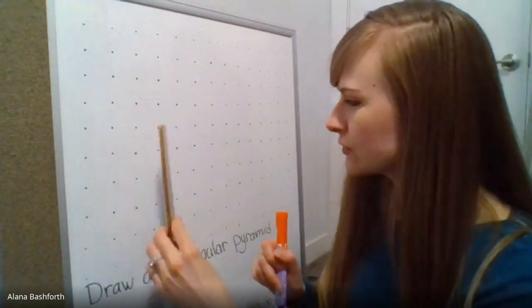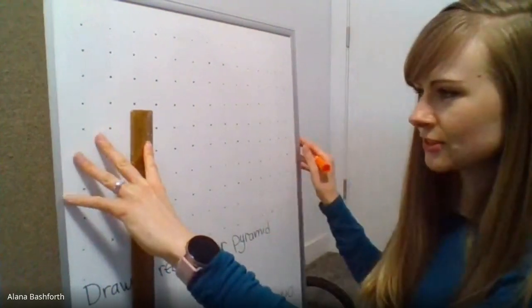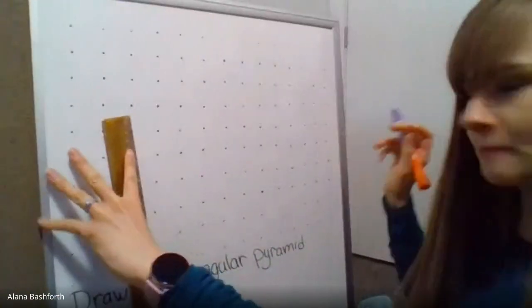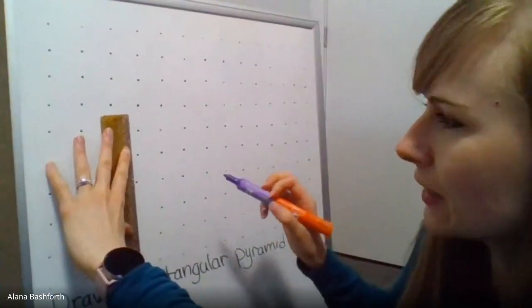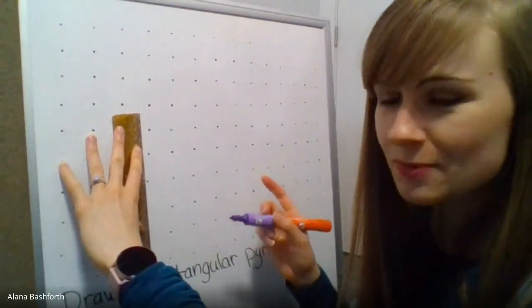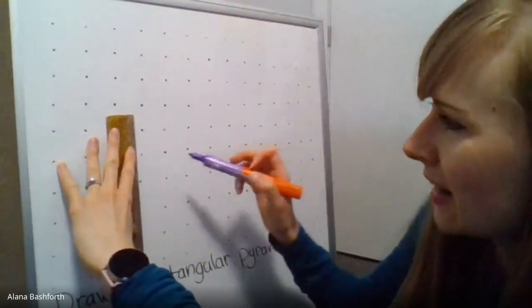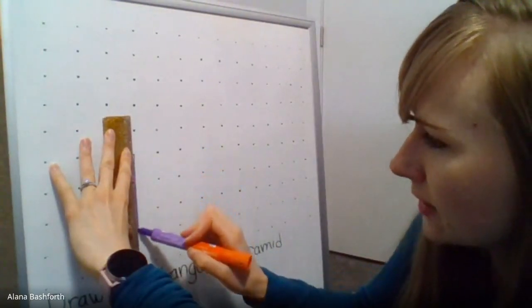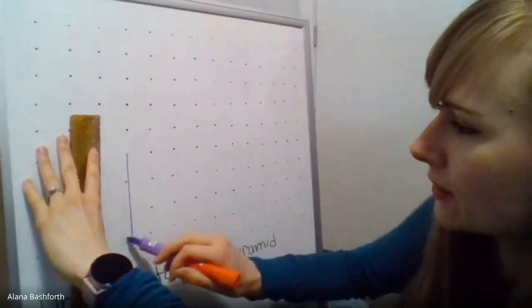First of all, we are going to draw our rectangle. My lines aren't very straight because I drew this myself. I don't have a printer at home, so we're just going to pretend that my dots are really nice and straight here.